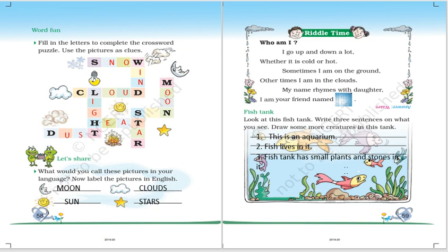This is a fish tank where you have to draw some more creatures and write down three sentences. I have written short three sentences. You can change these as per your wish. This is an aquarium. Fish lives in it. The fish tank has a small plant and stone in it.